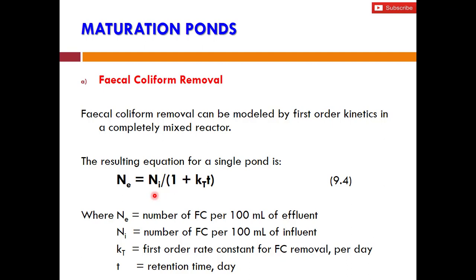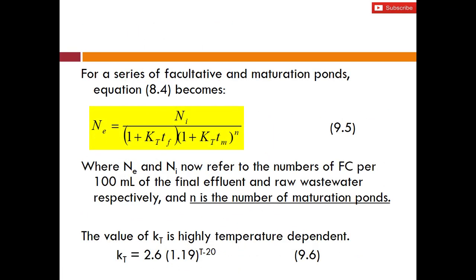If we have a series of facultative ponds and maturation ponds — which is normally the case in reality — the equation is modified to Equation 9.5: Ne equals Ni divided by (1 + kT × tf) times (1 + kT × tm)^n, where n is the number of maturation ponds and Ni and Ne refer to the fecal coliform before and after treatment.